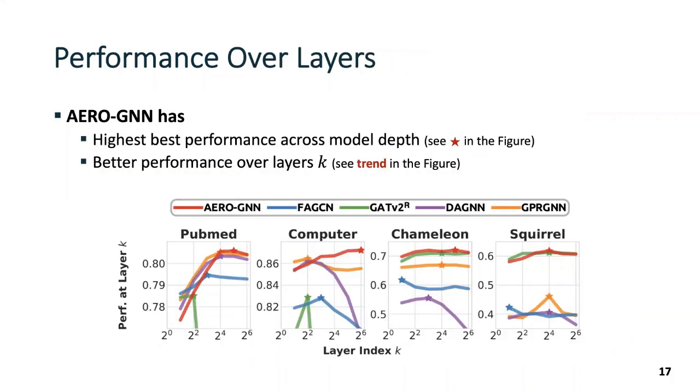We now check model performance over layers. From the figure, we see that the performance of ArrowGNN, the red line, increases over k, up to layer k 64. And its best performance, denoted by the red star, is higher than all the baselines. To summarize, ArrowGNN better learns deep graph attention compared to the baseline attention-based GNNs.